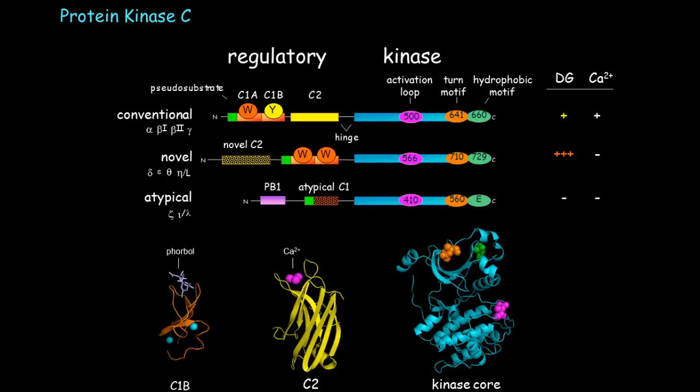Protein kinase C isoforms are also modified by phosphorylation at three conserved sites in the primary sequence of the kinase domain, and where they are in the 3D structure is shown in the model below. This phosphorylation is constitutive, and it is important to prime or mature protein kinase C into a catalytically competent enzyme that is then ready to respond to second messengers.